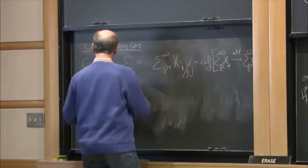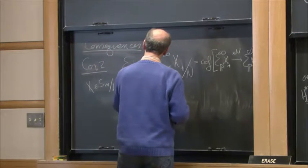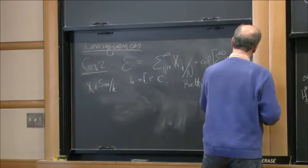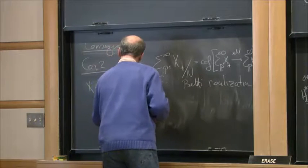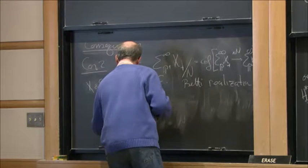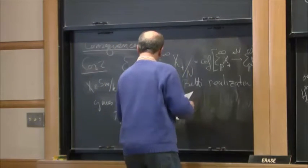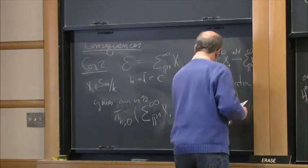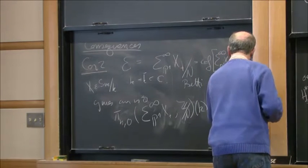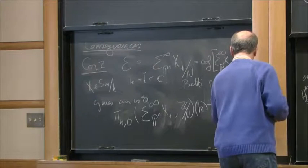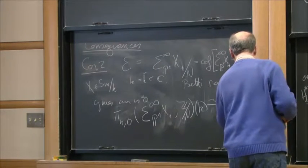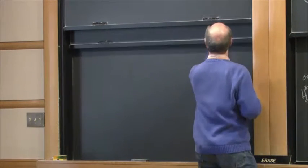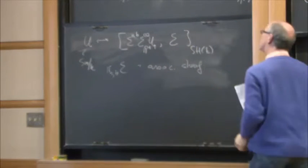So for X a smooth variety over K, K algebraically closed contained in C as above, the Betti realization gives an isomorphism of the global sections of this mod N homotopy sheaf to the mod N stable homotopy group of the usual infinite suspension spectrum. This would be the direct analog of the Suslin-Voevodsky theorem.